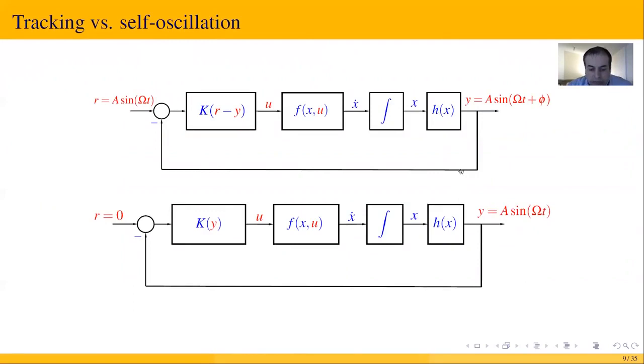the controller enforces the output to track the reference signal. On the other hand, in the self-oscillation loop, we don't have a reference input, but the controller K_y enforces the output to be periodic.